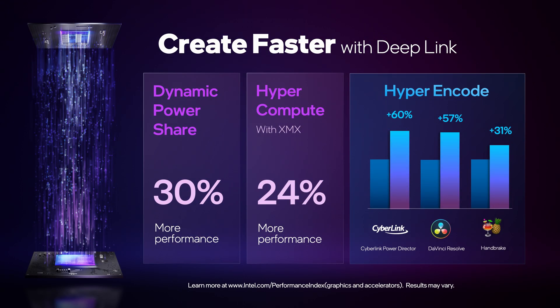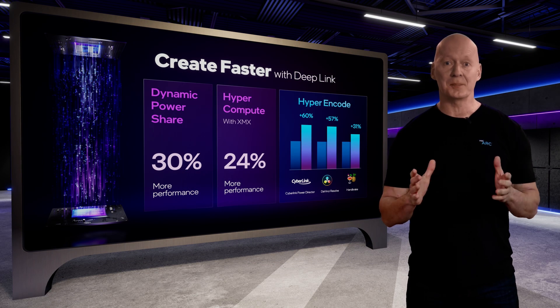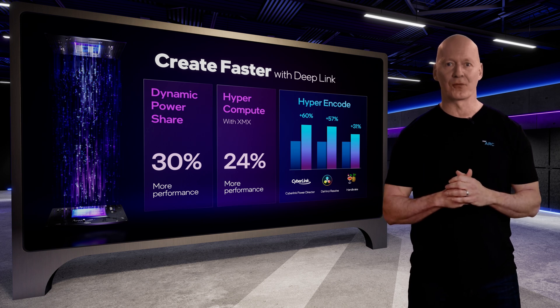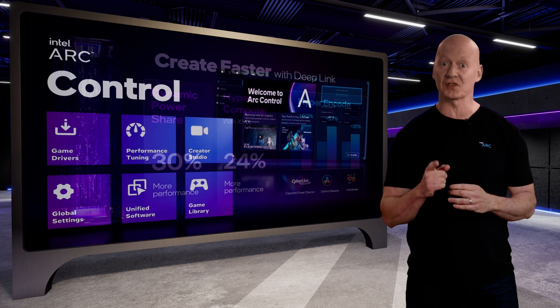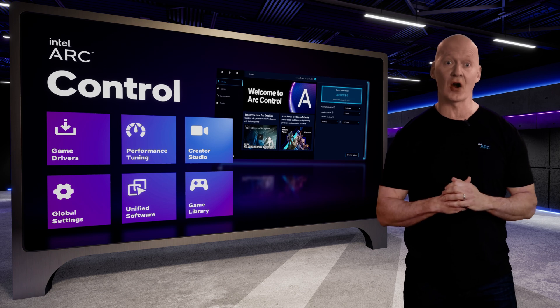And through Deep Link's hyper-encode capability, media engines from across the platform work together to speed up video encoding workloads by up to 60% compared to the performance of just a single GPU. Deep Link maximizes platform performance through software, and we've invested as much into Arc software as the hardware itself.